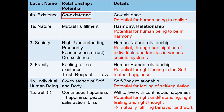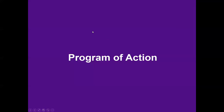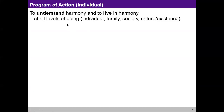The will to live with continuous happiness is very much in me, and I have the potential for understanding, feeling, and thought which can enable mutually fulfilling behavior and work. We explored these in detail, starting from the human being, then moving to family, society, and nature. Whatever we discussed is ultimately a reflection of coexistence — that is the essence. The program of action at the individual level is to understand harmony and to live in harmony at all levels.